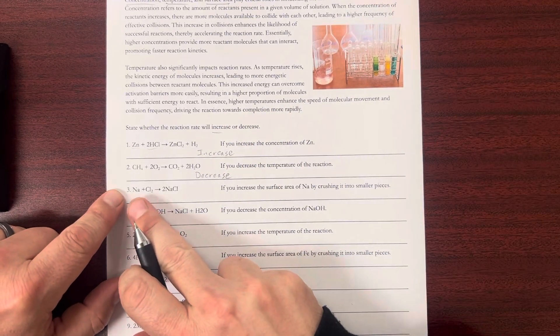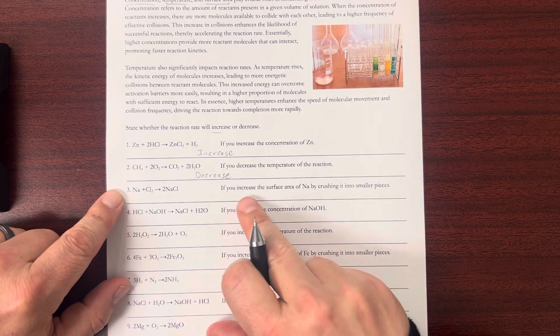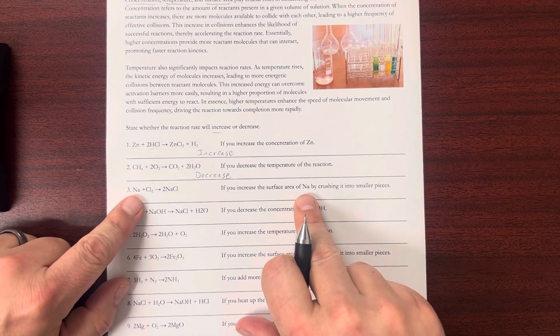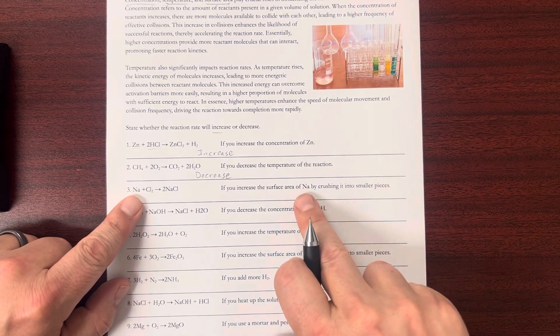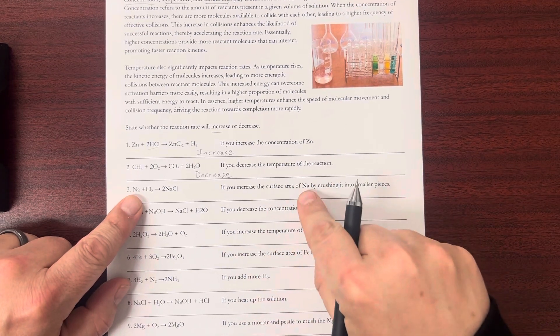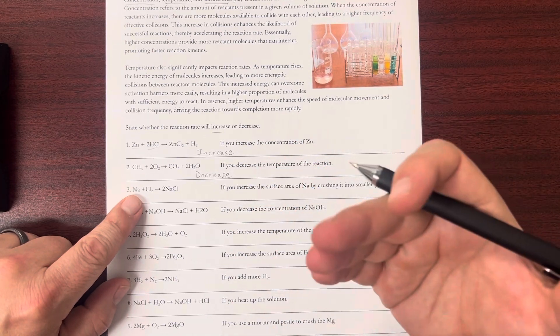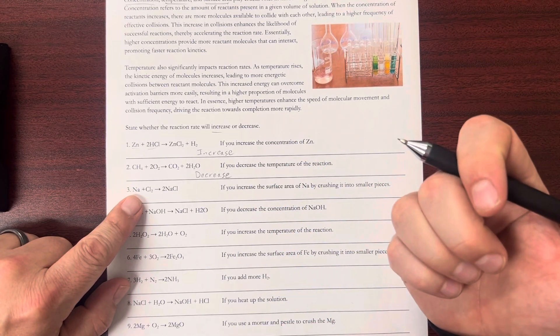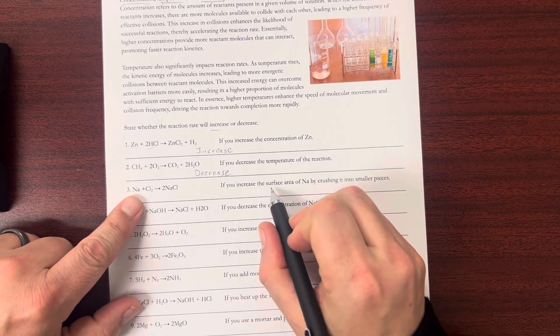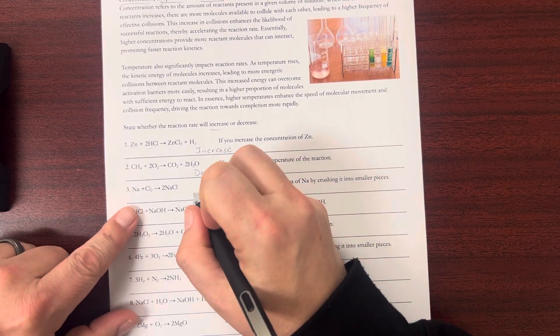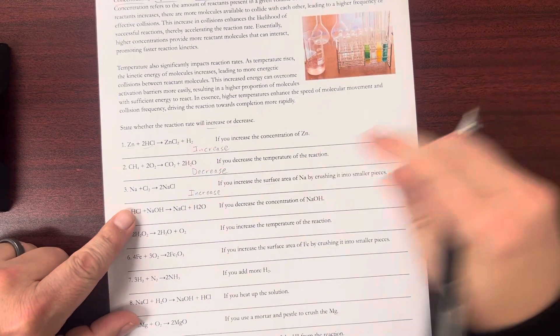And then let's do one more. Here's my equation. If you increase the surface area of Na by crushing it into smaller pieces, so what that means is when I've crushed the Na into smaller bits like a powder, there's more area exposed for the reaction to happen, and that's why it increases the rate. So in this case, I've increased the surface area, which means it will increase the rate of the reaction.